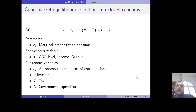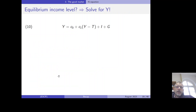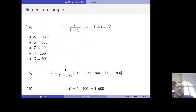In Chapter 3 of the Blanchard textbook, the investment function is modeled very simplistically. We assume investment is exogenous and does not depend on the interest rate. In the numerical example, investment is set equal to 150. The reason the investment function is so simple is that in Chapter 3, we don't yet know what the interest rate is.